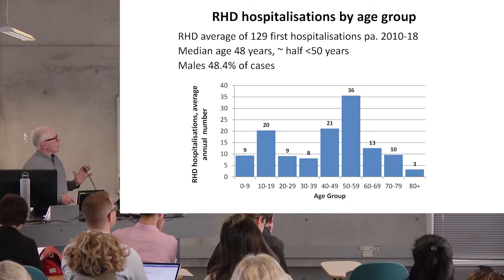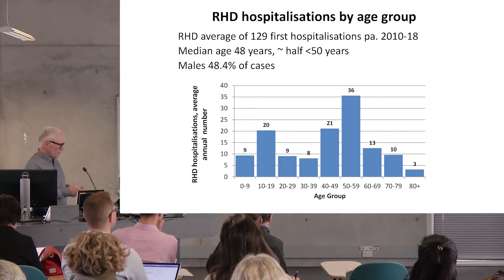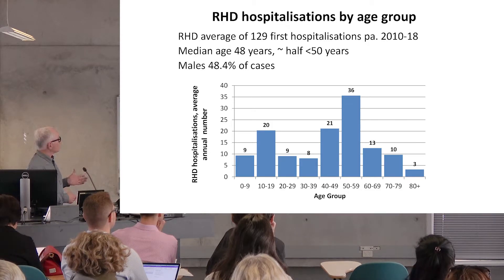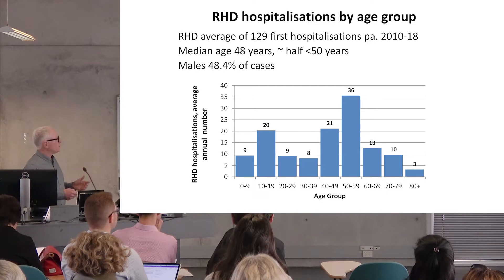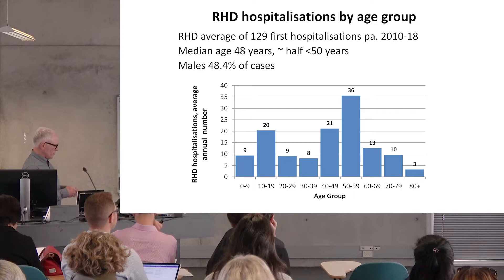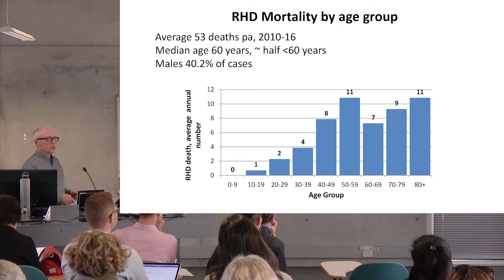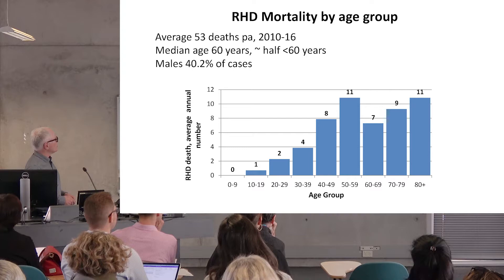Even though we talk about ARF, the reason we're trying to prevent ARF is to prevent rheumatic heart disease. The average number of cases per year isn't huge, but this disease obviously carries huge consequences for those affected — shortened lifespan, alteration in activities, long-term medication, and surgical treatment. Looking at mortality, it's a slightly better picture: mortality is declining and occurring in older age groups.